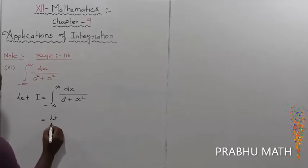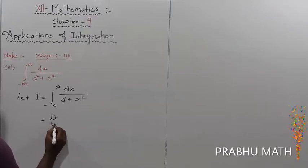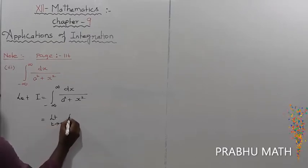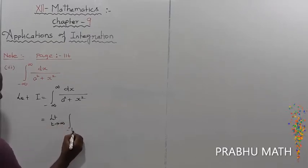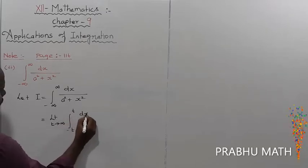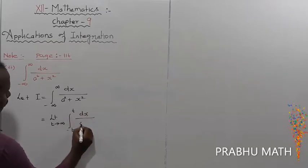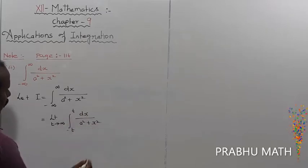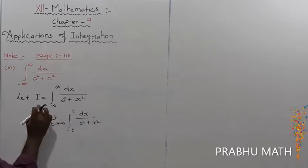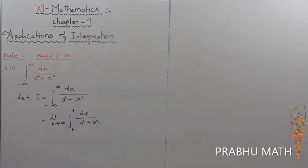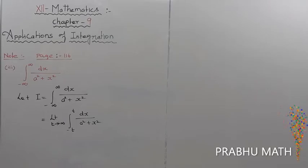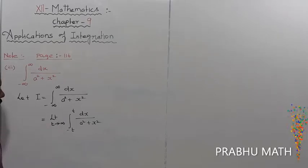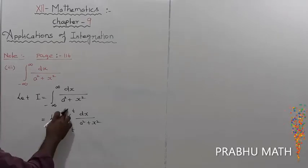This is going to be the limit as t tends to infinity of the integral from minus t to plus t of dx divided by a squared plus x squared. For the interval minus infinity to plus infinity, we consider this as a limit with t tending to infinity from minus t to plus t.